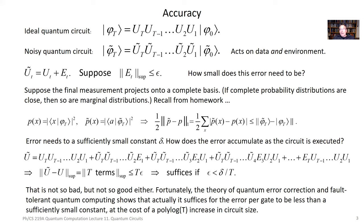Now let's take up the question of accuracy. I might have some ideal quantum circuit which, if I could execute it, would solve some problem of interest, but in a real device we're not going to be able to hit those unitary transformations right on the nose. Since the unitary transformations live in a continuum and can't be specified to infinite precision, the gates which are applied are not exactly the ideal gates — they have some small error. If I put together T gates, those errors are going to accumulate over the course of execution.